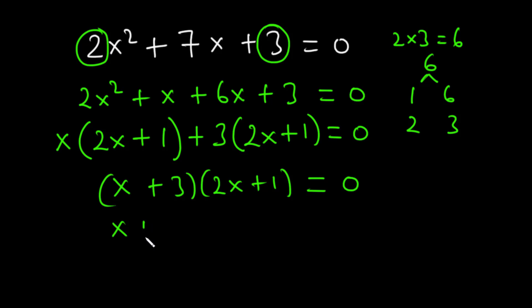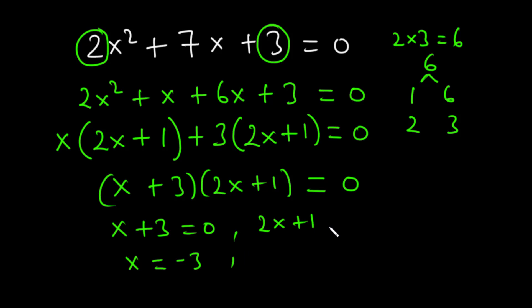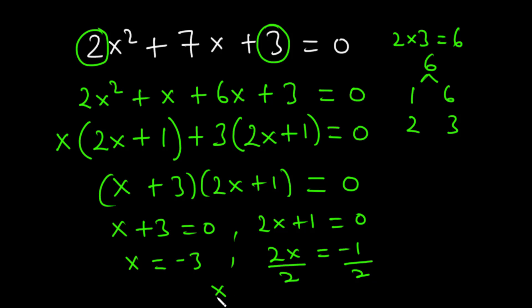So we have (x + 3)(2x + 1) equals 0. Setting x plus 3 equal to 0 and transposing gives x equals negative 3. Setting 2x plus 1 equal to 0, we get 2x equals negative 1, and dividing both sides by 2 gives x equals negative one-half. So the roots of the equation are x equals negative 3 and x equals negative one-half.